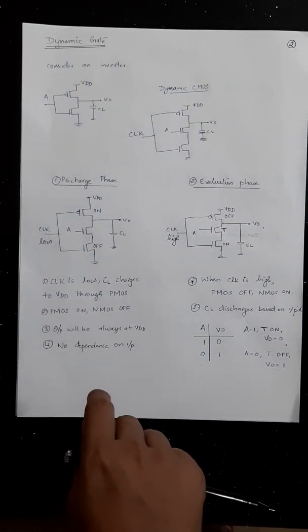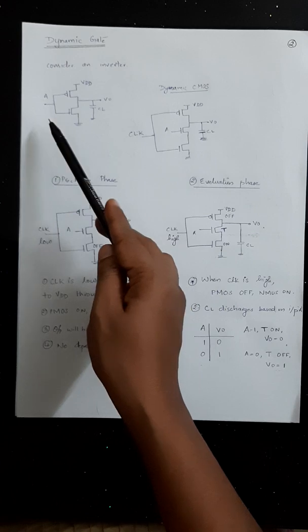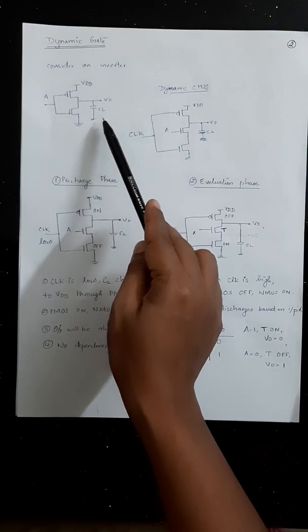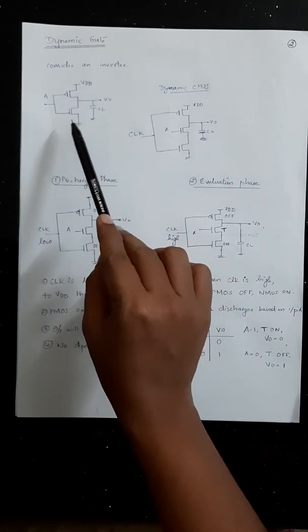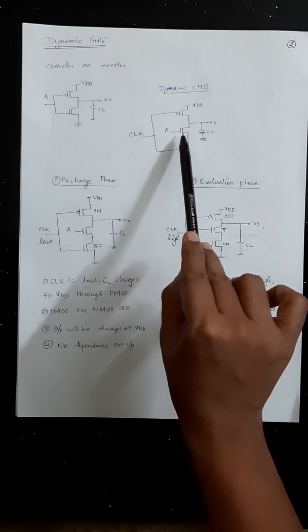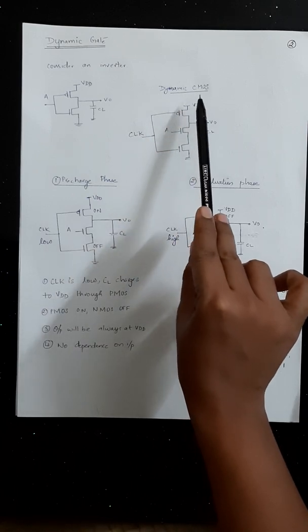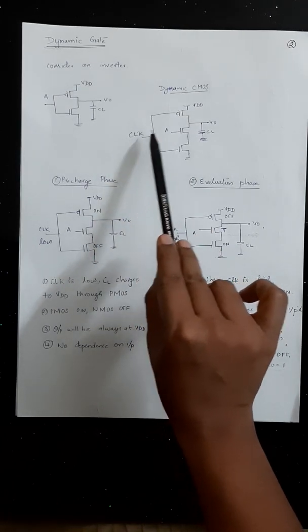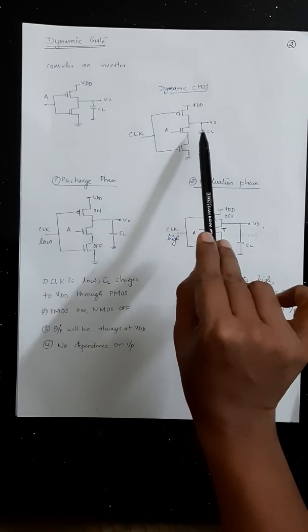Consider an inverter: we have PMOS and NMOS connected, A is the input, Vdd, and CL is the load capacitance connected at the output. Now when you want to draw a dynamic CMOS, keep the NMOS section as it is, then provide a PMOS connected to Vdd and an NMOS connected to ground, and provide the clock there. The input section and the output section with load capacitance remain the same.